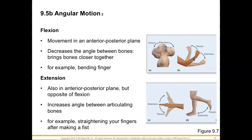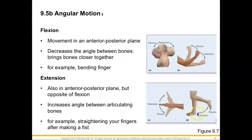Another example of extension would be straightening your finger after making a fist. At the wrist, pulling that palm downward is flexion — decreasing the angle — whereas moving the posterior side of the hand away and up is extension. In the leg, moving the fibula and tibia toward the femur decreases the angle and is flexion, whereas putting the foot back down is extension.